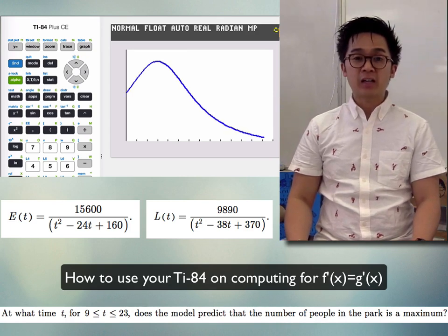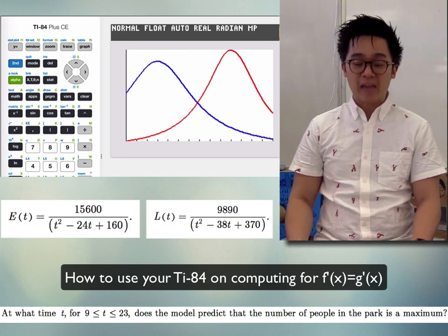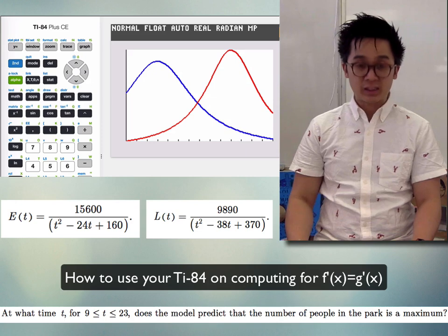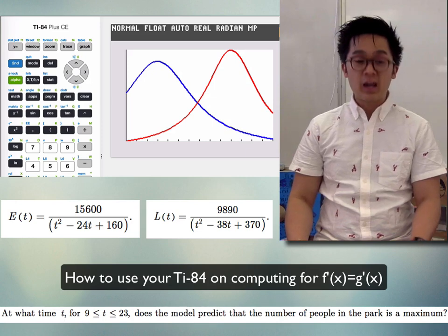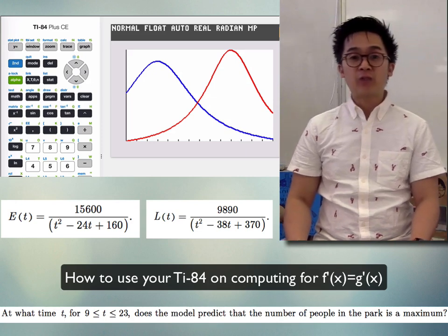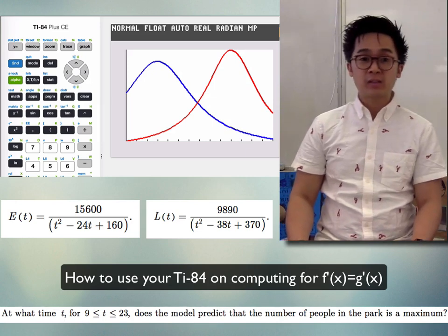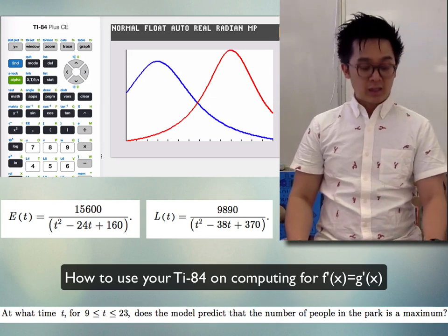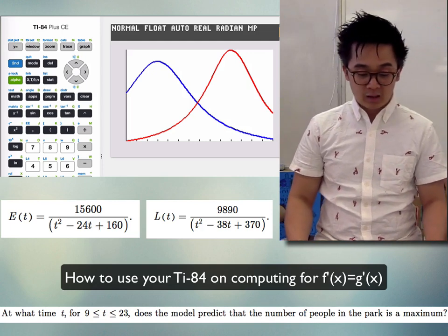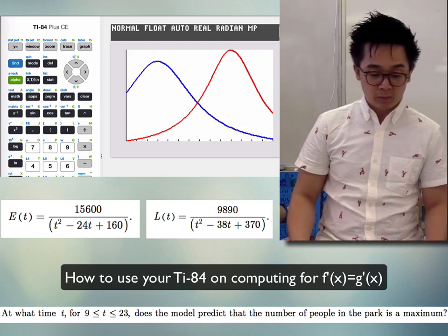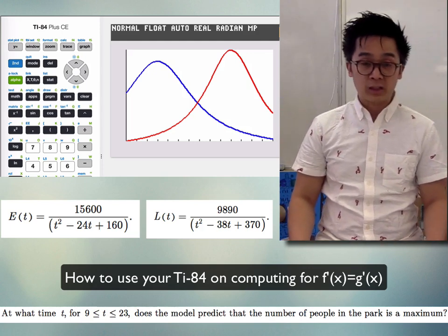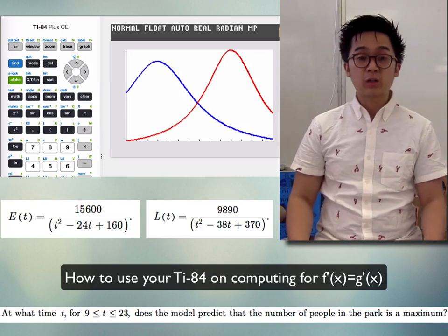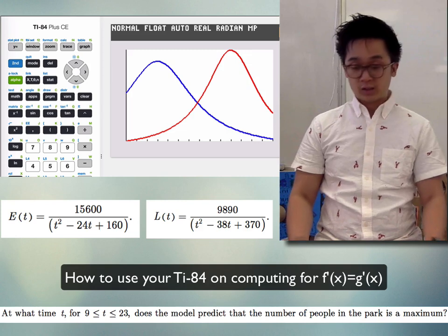Your calculator will finally show you where the graph actually is. Now you can find the point of intersection to answer part (d), which is finding the maximum number of people inside the park using your derivative function.